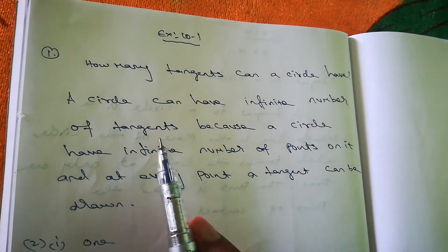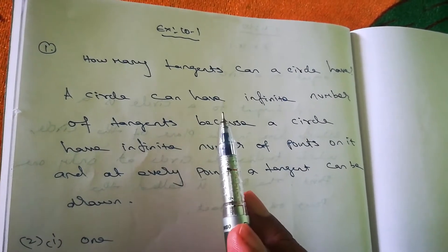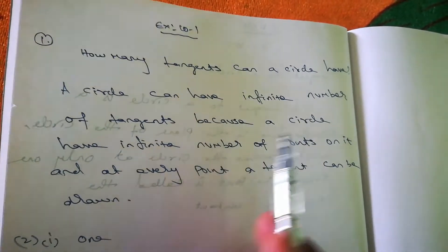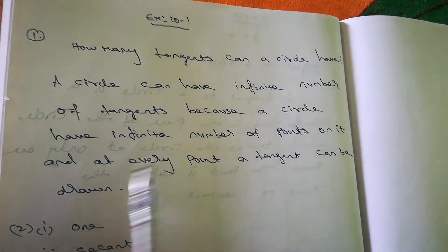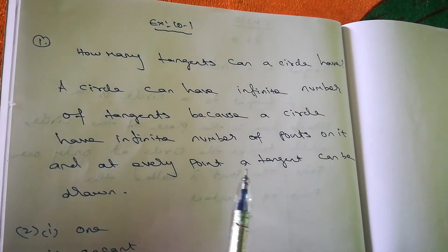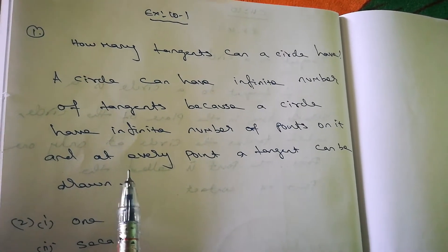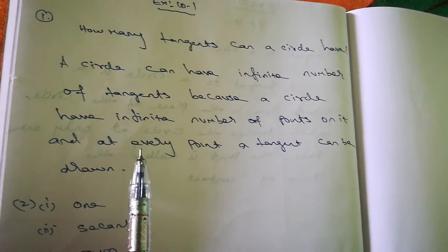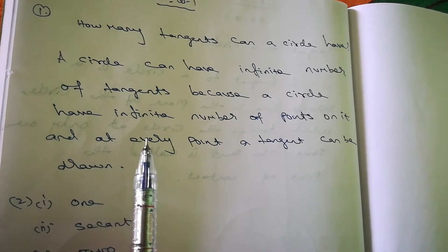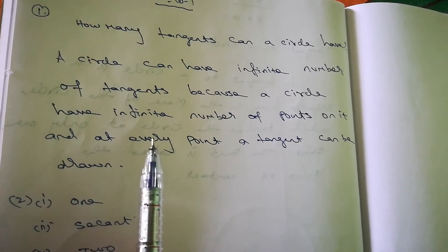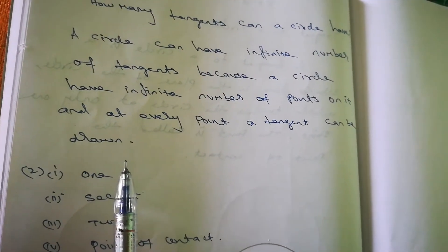A circle can have an infinite number of tangents. This is because a circle has an infinite number of points on it, and at every point a tangent can be drawn. So the answer is: a circle can have an infinite number of tangents.